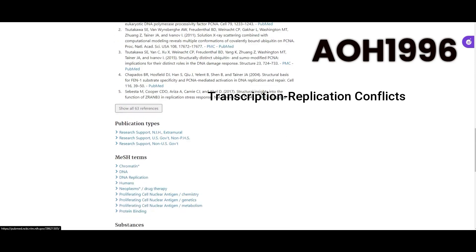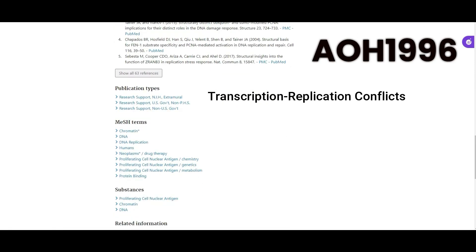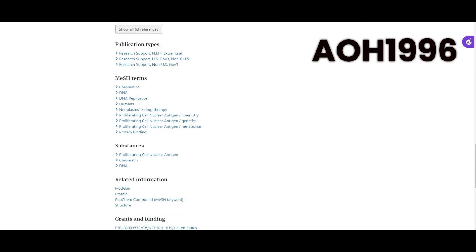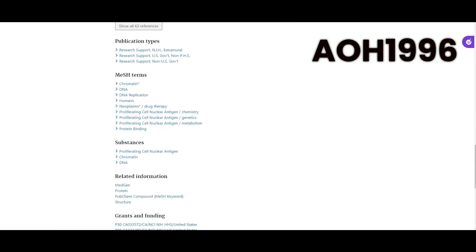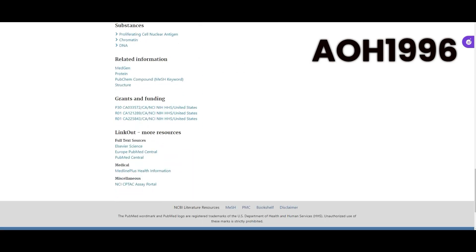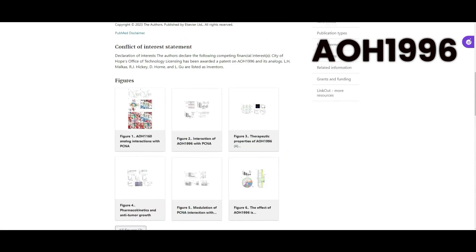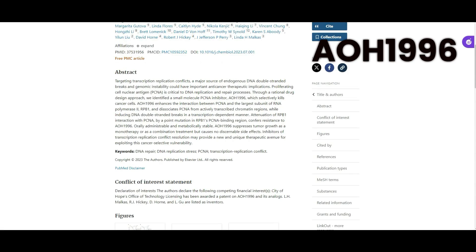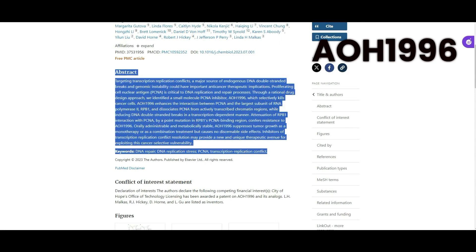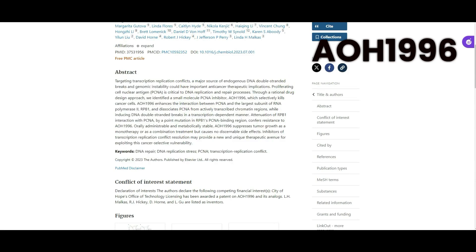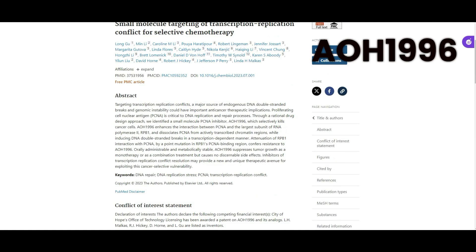It delves into the intricate strategies aimed at transcription replication conflicts, a notorious culprit for DNA double-stranded breaks and genomic instability, which are pivotal in the development and progression of cancer. The document presents a series of seven compelling images that unravel the complexities of this method and its potential as a game-changing cancer treatment.